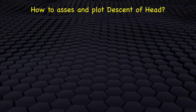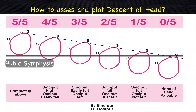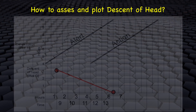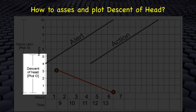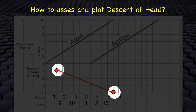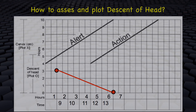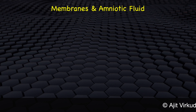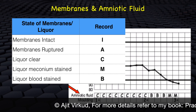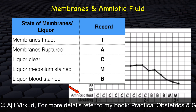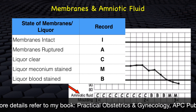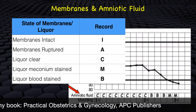Descent of head is assessed by abdominal palpation and not by pervaginal examination. It refers to how much of the fetal head in fifths is palpable in the abdomen above the pubic symphysis. On the left of the graph is the word 'descent' with numbers 5 to 0. Descent is recorded as a small O at the same time as every vaginal examination. Presence or absence of membranes and color of amniotic fluid is recorded at each vaginal examination. Membranes are recorded as I if intact and A if absent; C if amniotic fluid is clear, M if meconium-stained, and B if blood-stained.